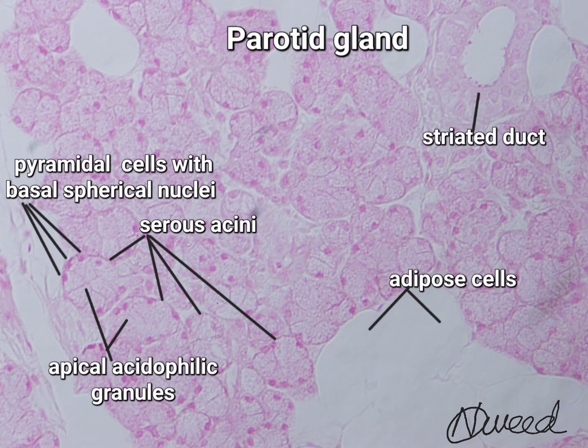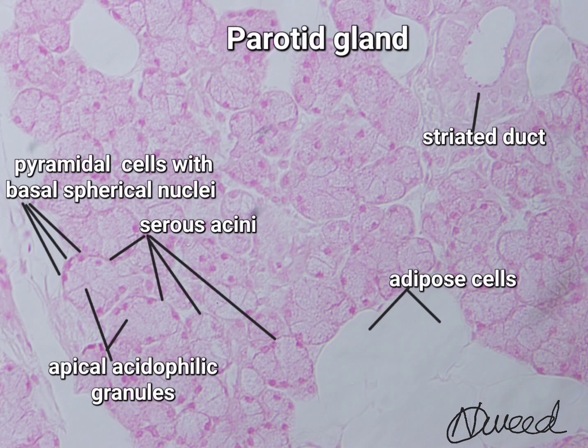Acini open into intercalated ducts that have a small diameter and are lined by simple cuboidal epithelium. Several intercalated ducts open into the striated duct, which has a much larger caliber and is lined by a single layer of low columnar epithelial cells. The intralobular ducts are lined by simple cuboidal epithelium and interlobar ducts are lined by pseudostratified cuboidal epithelium.